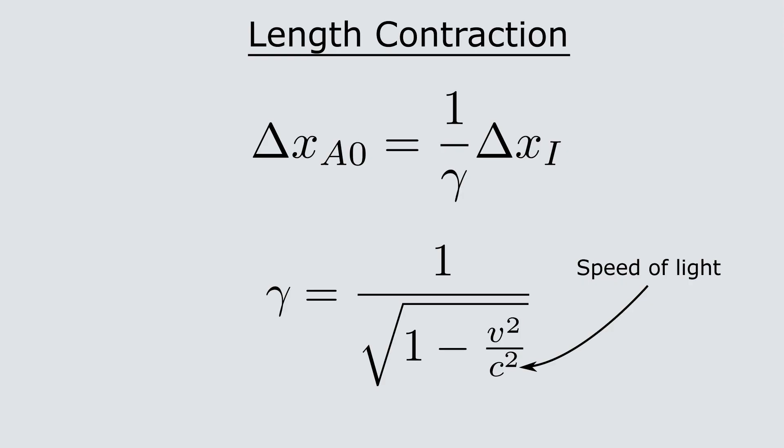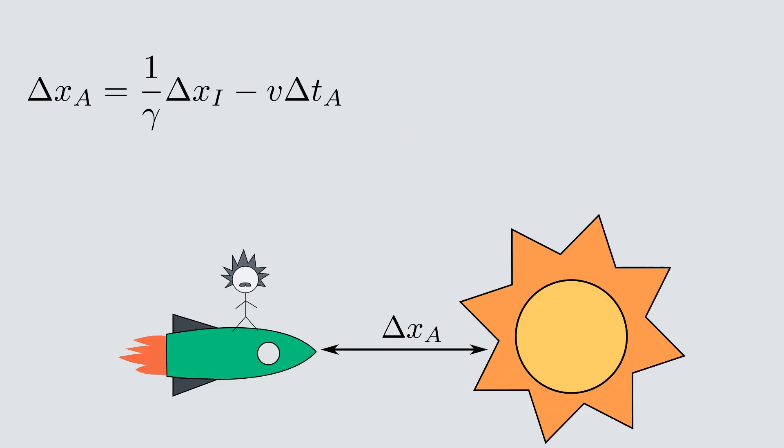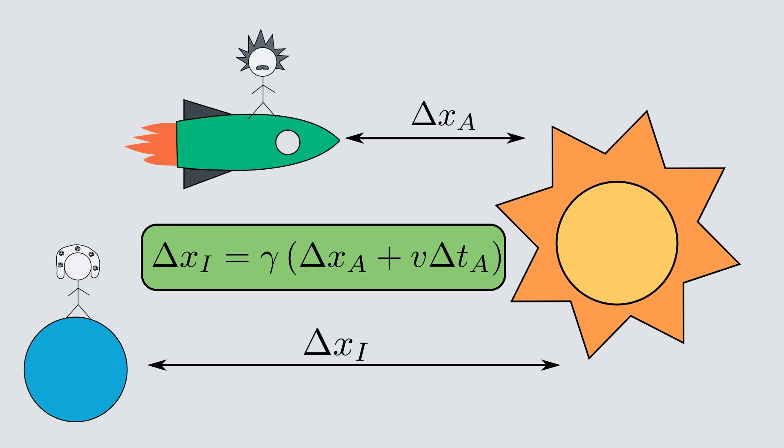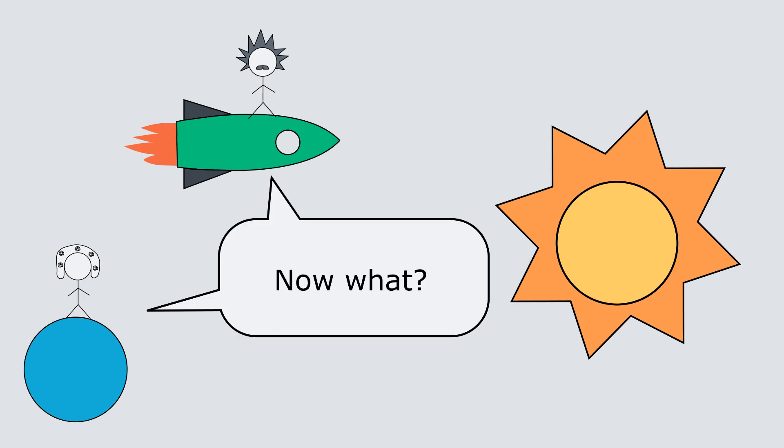Therefore, the initial distance will be 1 over gamma times delta xi, where gamma is just the usual gamma factor. Now, we can solve for delta xi to find a way of describing distances to the same object according to two different observers. But now what? How do we know that there's more to do?